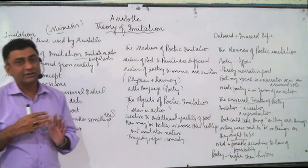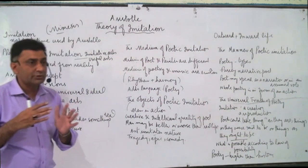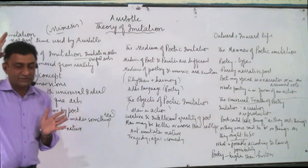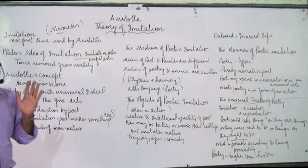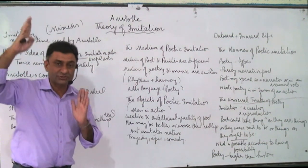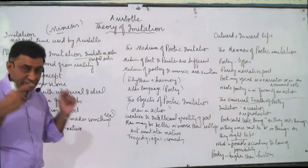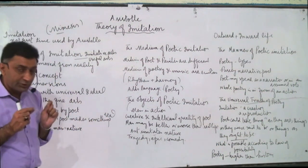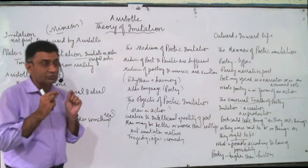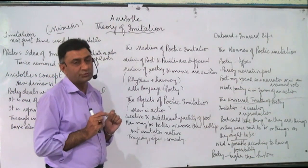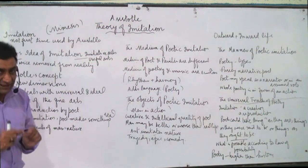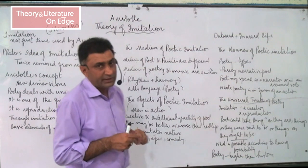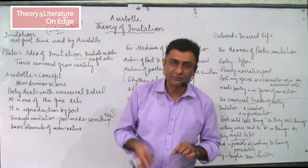Poets are going to copy this copy. The first reality is ideal reality lying with God; the second reality is this observable universe; and the third reality is what the poet imitates. So the poet's reality is twice removed from reality — whatever he writes is a copy of a copy, a shadow of a shadow, an imitation of an imitation.